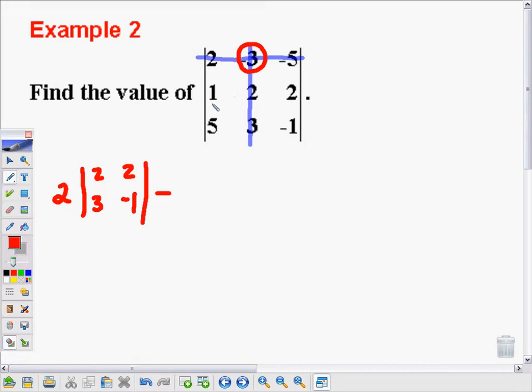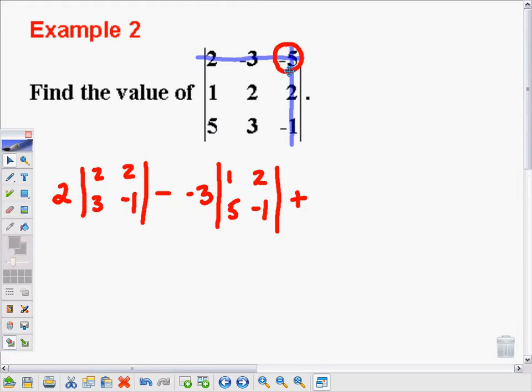Now I subtract from that. I move this over, each of these are going to move over one column. And now I've got another matrix that's left, the 1, 2, 5, negative 1. And I'm going to find the determinant of that: 1, 2, 5, negative 1. And I put my multiplier out in front. And then we do it one more time, except this time I put addition there. It's an alternating pattern.